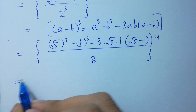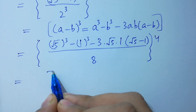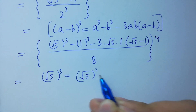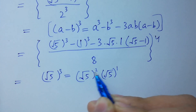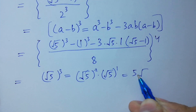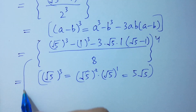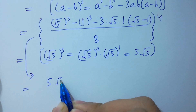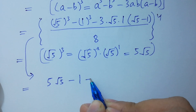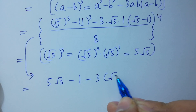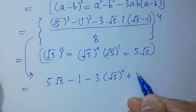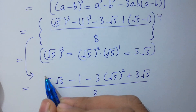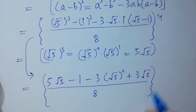Square root of 5 cubed equals square root of 5 squared times square root of 5, so the square root cancels with the square giving us 5 times square root of 5. So the numerator becomes 5·square root of 5 minus 1 minus 3 times 5 plus 3·square root of 5, all over 8, to the whole power 4.